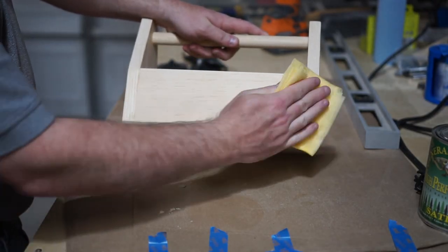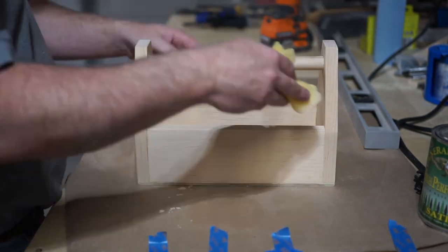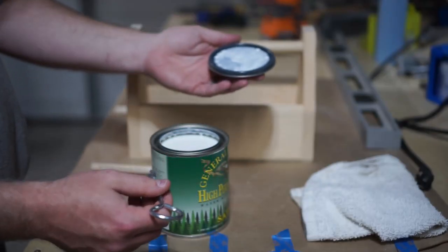If you want, this could be the end. I wanted to take it one step further and add a coat of water-based poly, so I wiped everything down with a cheesecloth before I applied a couple coats.